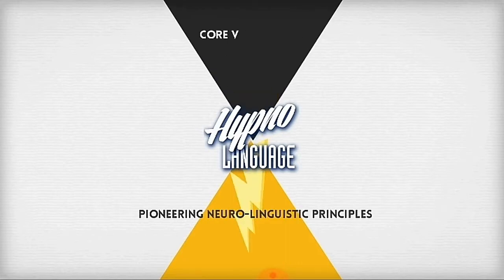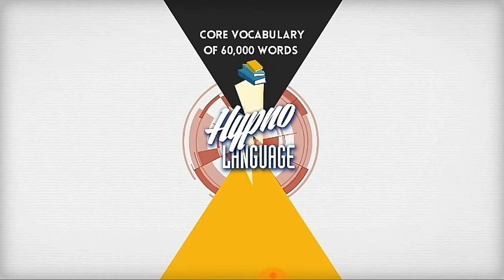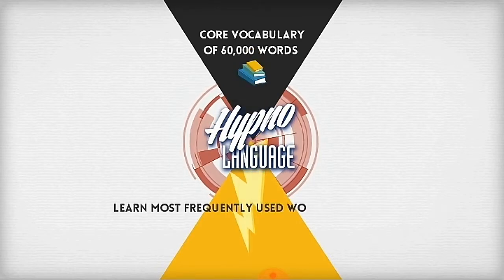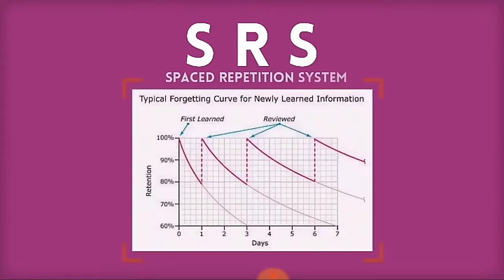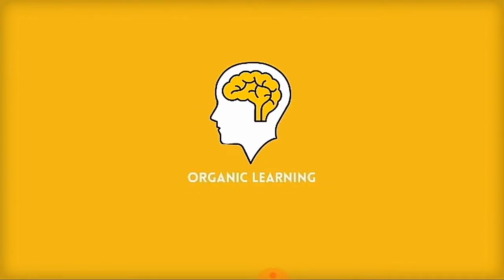The hypno-language app is pioneering state-of-the-art neuro-linguistic principles and with a core vocabulary of 60,000 words. This program will have you learning all of the most frequently used words effortlessly via the spaced repetition system and scientifically proven techniques, such as the principle of anticipation and organic learning with voices and imagery.